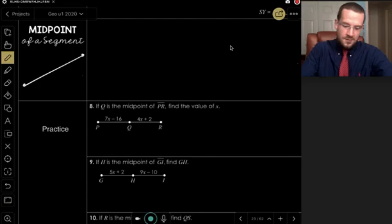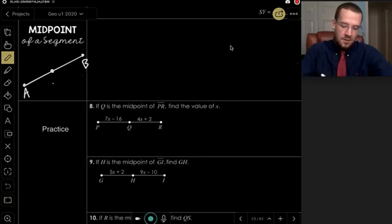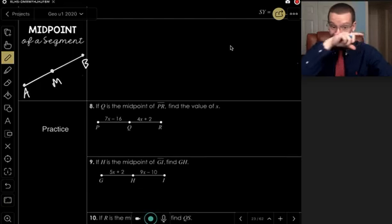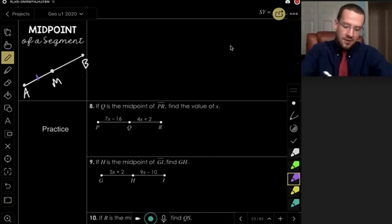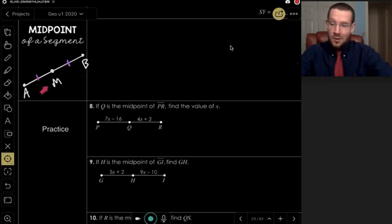Let's say I have a line segment. Let's call this AB. And there is some point directly in the middle, we will call point M. So what we will notice is if something is directly in the middle, then there is an equal measure on each side. And we denote that equal measure with these two little hash marks.